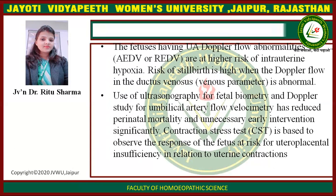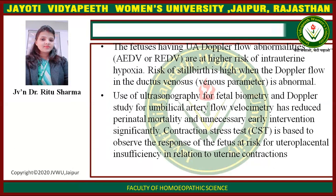Features showing umbilical artery Doppler flow abnormalities indicate a higher risk of intrauterine hypoxia. Risk of stillbirth is high when the Doppler flow in the ductus venosus is abnormal. Use of ultrasonography for fetal biometry and Doppler study for umbilical artery flow has reduced perinatal mortality and unnecessary early intervention significantly. The contraction stress test is used to observe the response of the fetus at risk for uteroplacental insufficiency in relation to uterine contractions.